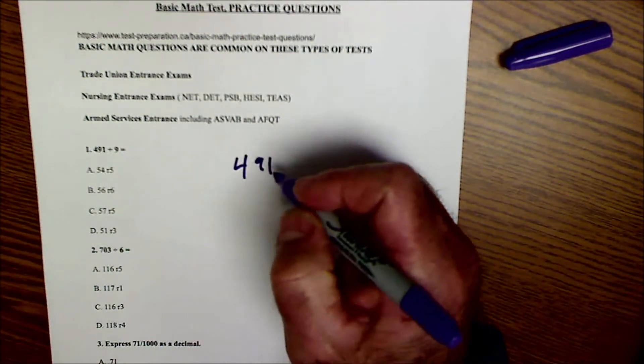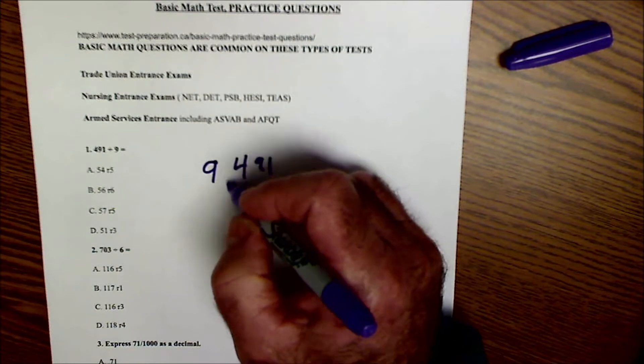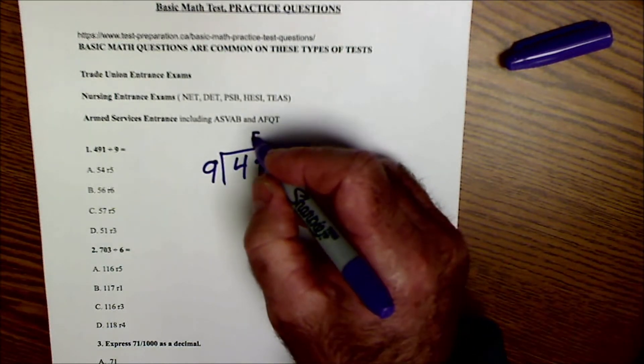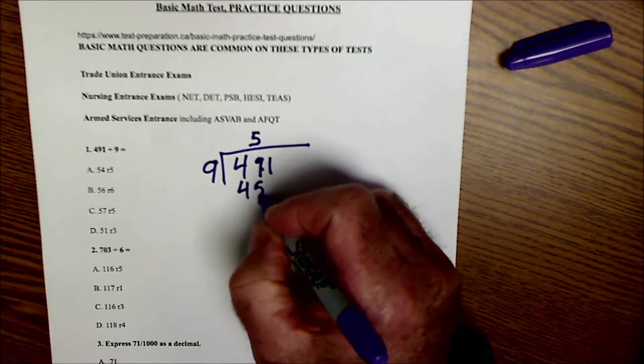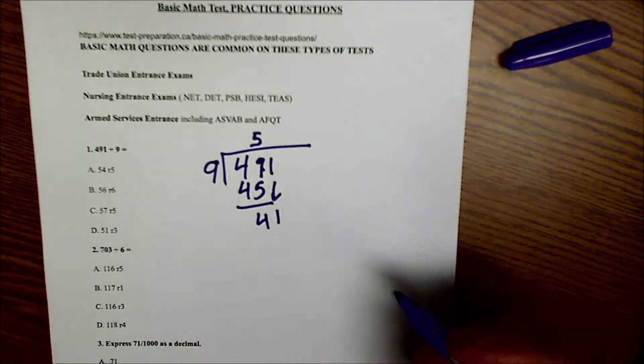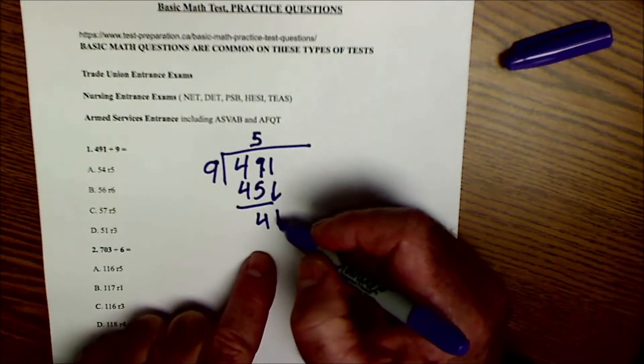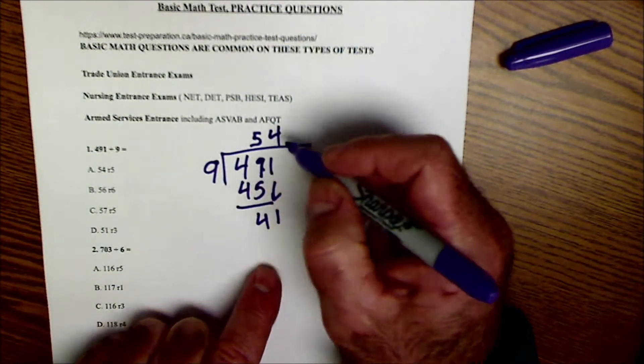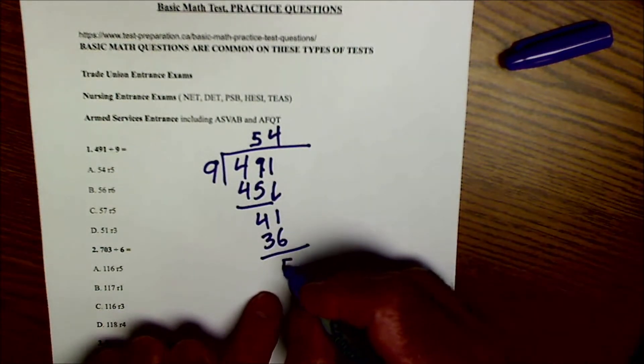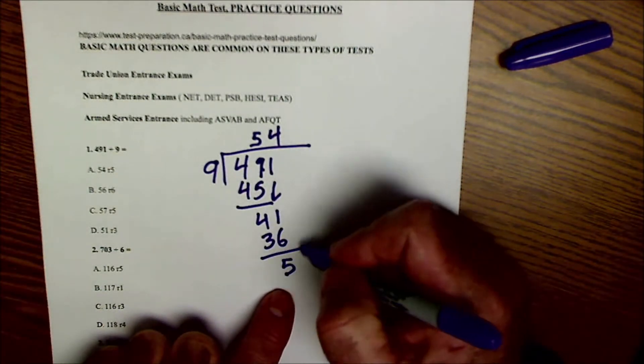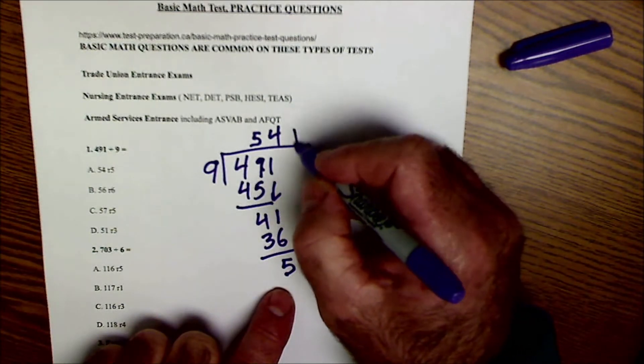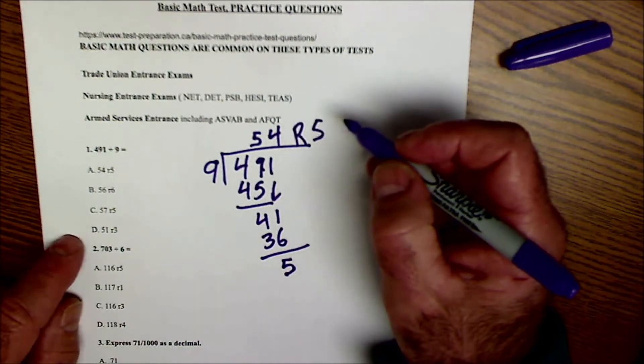So I have 491 divided by 9. 9 goes into 49 five times to give me 45. 49 minus 45 is 4, bring down that 1. 41, 9 goes into 41 four times to give me 36. 41 minus 36 is 5. There's nothing left to bring down so that's my remainder. So I'm at 54 remainder 5. I go over here and I see it's answer A. So there's the first problem right there.